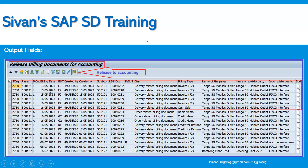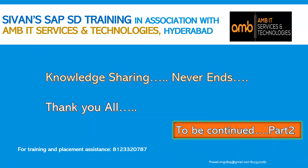Here you can select the list of billing documents and click on release to accounting, so it will release and post to accounting. You can try this in the quality system by having the billing block set and then releasing to accounting. When you execute the VFX3 transaction with respect to sales organization, the blocked billing documents can be released for accounting. This is the purpose of report VFX3. In the next part, we will see the practical — how VFX3, VF04, and VF05 transactions work. We will execute them in the system. Knowledge sharing never ends. Thank you all. Have a nice day.